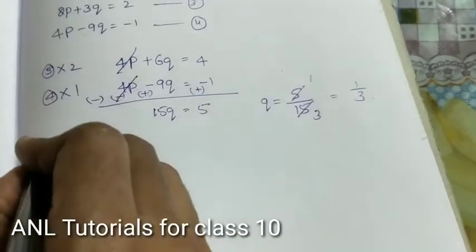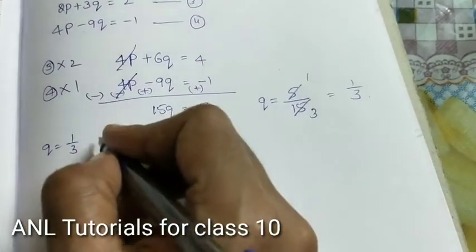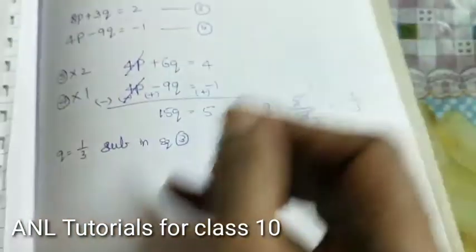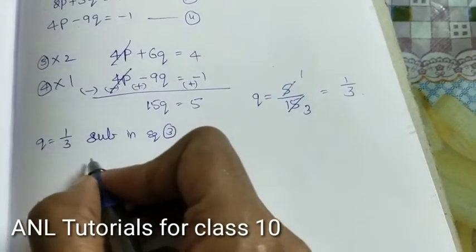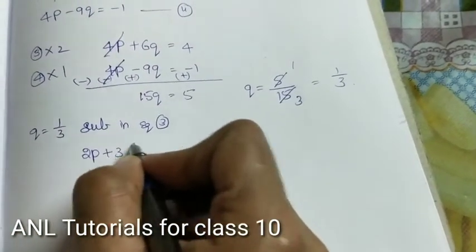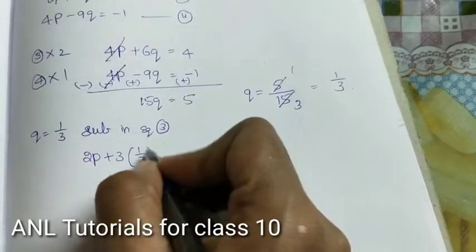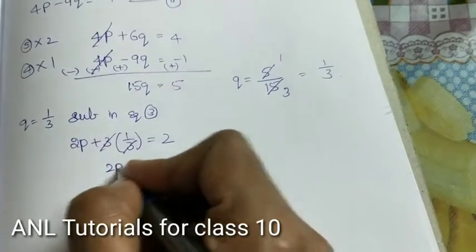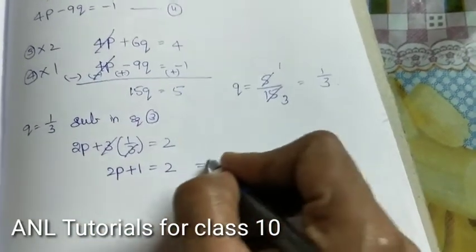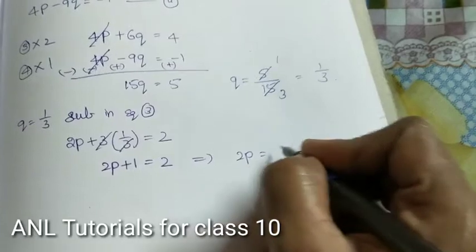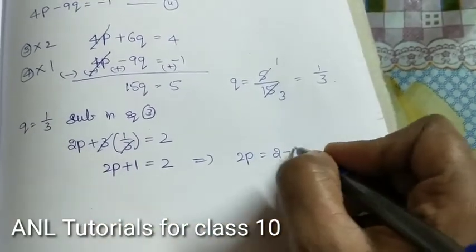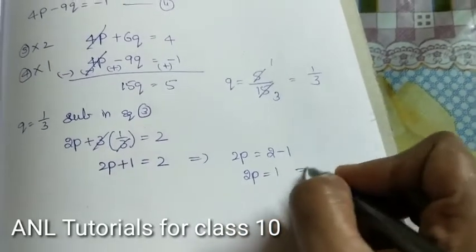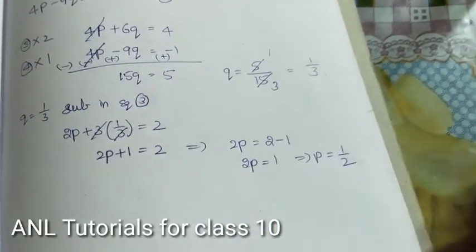Now q equals 1 by 3. Substitute q into equation 3: 2p plus 3 times 1 by 3 equals 2. The 3s cancel, giving 2p plus 1 equals 2. So 2p equals 1, and therefore p equals 1 by 2.